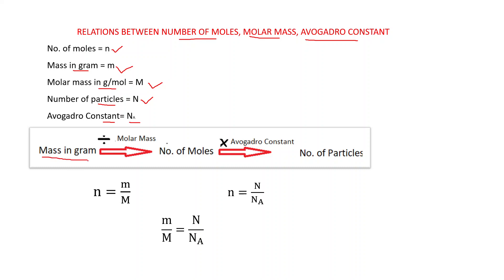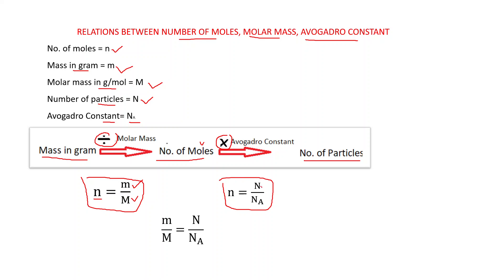If mass in grams is given and divided by molar mass, we get the number of moles: n = m / M. And if number of moles is multiplied by Avogadro constant, we can find out the number of particles. These relationships can be correlated as: if we know number of particles divided by Avogadro constant, we get number of moles; or multiplying moles by Avogadro constant gives number of particles. Both formulas give n, so we have: m / M = N / Nₐ. Generally, if any two of the four quantities are known, the third and fourth can be calculated.